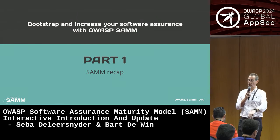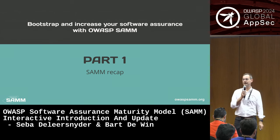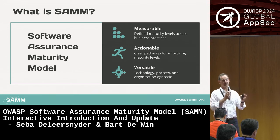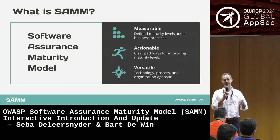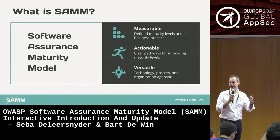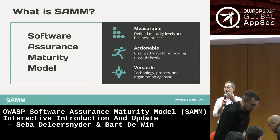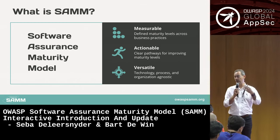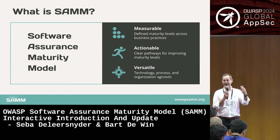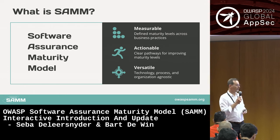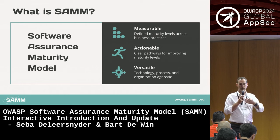First, a SAMM recap. If you already know SAMM, you have a five-minute nap. If you're new, pay attention. Software Assurance Maturity Model — that's what it stands for. The elevator pitch: with SAMM you can actually measure your AppSec activities and how you're building them into your product or software lifecycle. Once you can measure it, you can improve it. It's also quite actionable, describes different activities clearly, and provides you with an objective for how to do this and measure your activity.